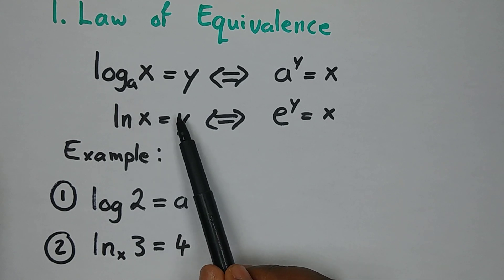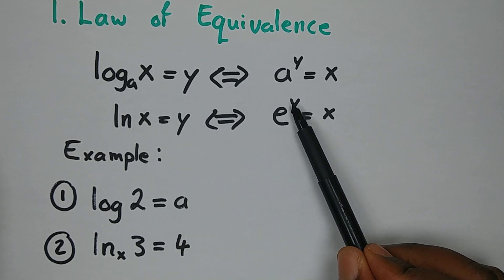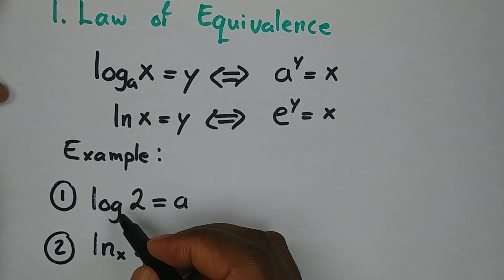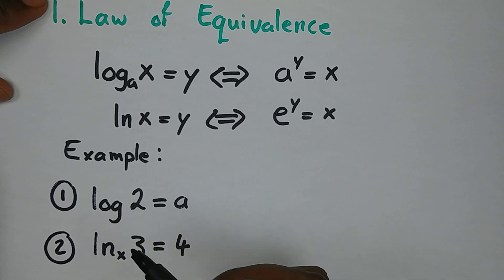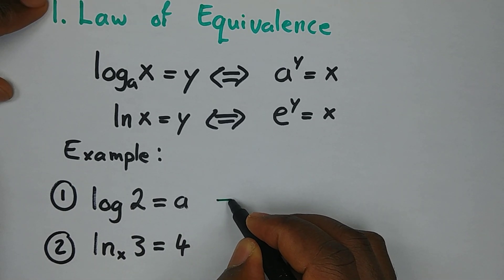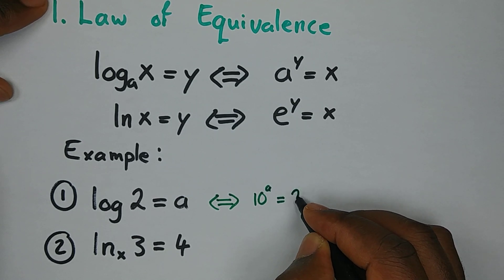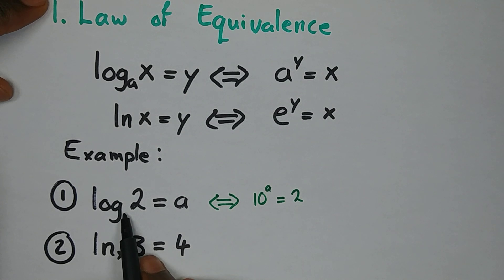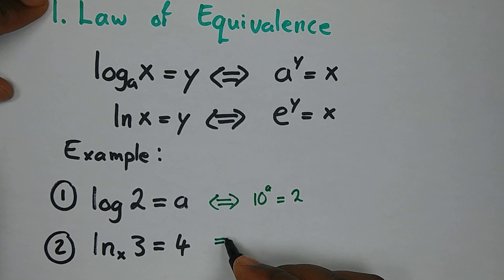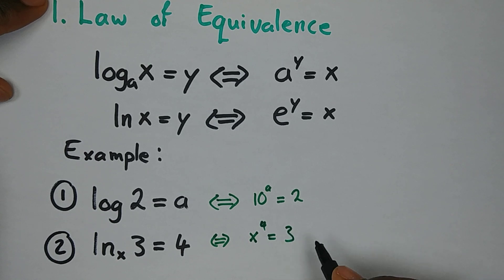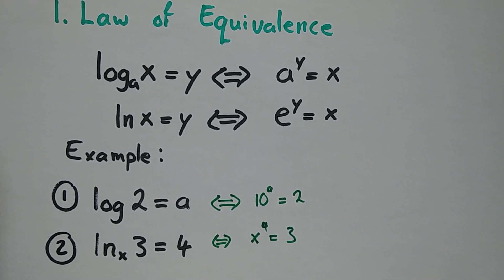For the natural log, since it's in base e, e to the power y equals x. Let's take some examples — change to exponential form. The base here is 10 since there's no written base, so this is equivalent to 10 to the power a equals 2. Base to the power exponent equals argument — that's how we apply the Law of Equivalence.